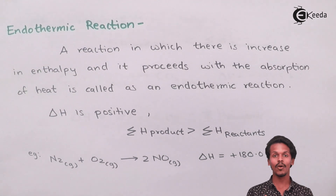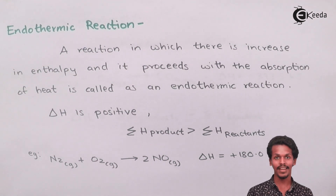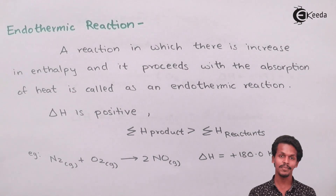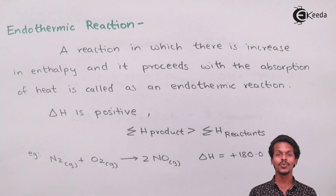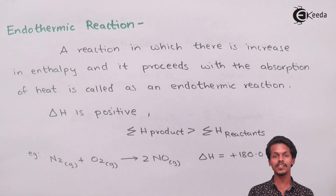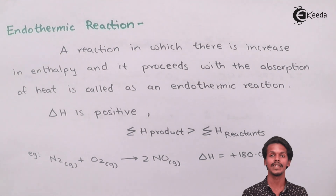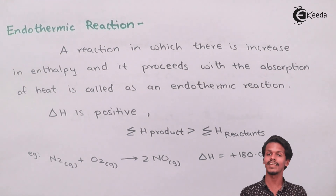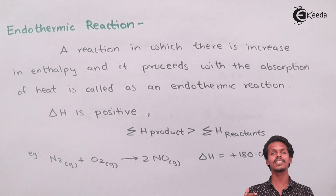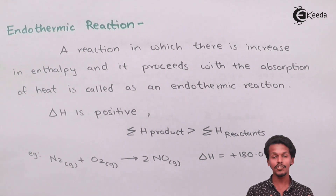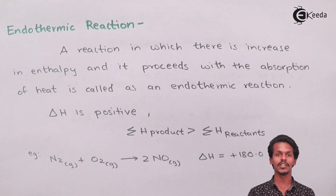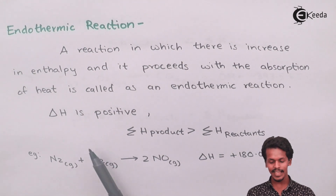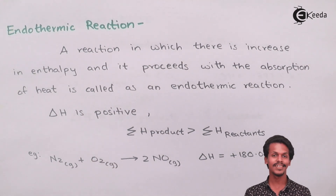'Endo' means in, and 'thermic' means energy in the form of heat. So a reaction in which energy is entering the system or the process is known as an endothermic reaction. In this process, heat is not evolved but is consumed, and that is the reason delta H is said to be positive.